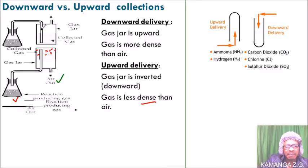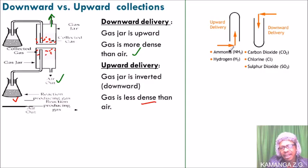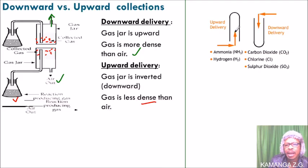For downward delivery, it is when the gas is more dense than air. Once the gas is delivered after the reaction, it starts settling and displaces the air out in the upward direction. We also have another diagram here showing the same concept. In upward delivery, the gas gets into the inverted tube and displaces the air since it is less dense than air.